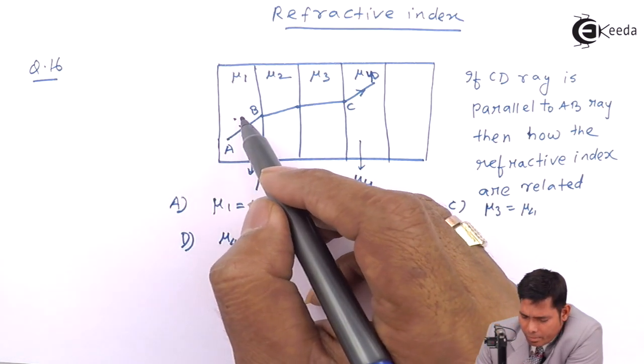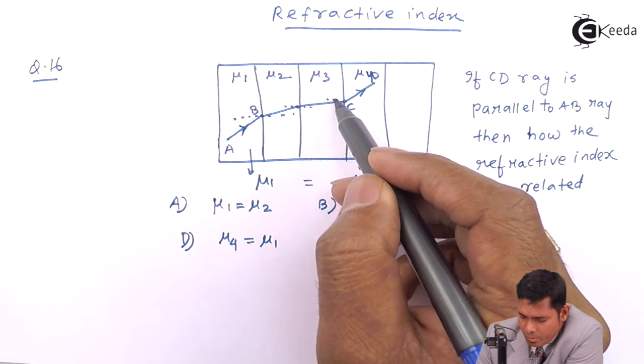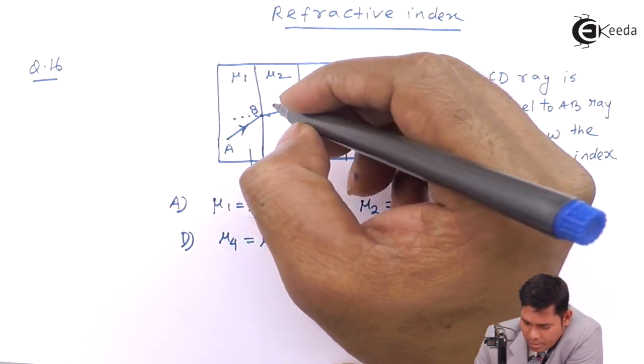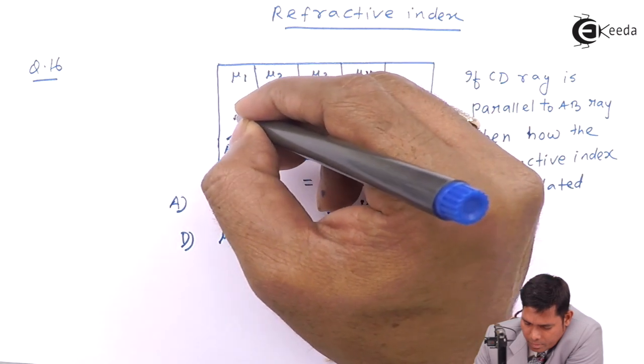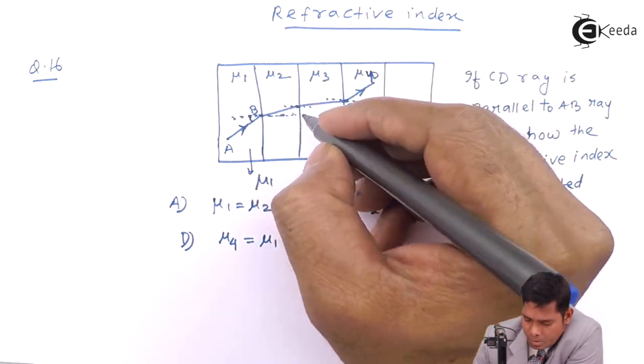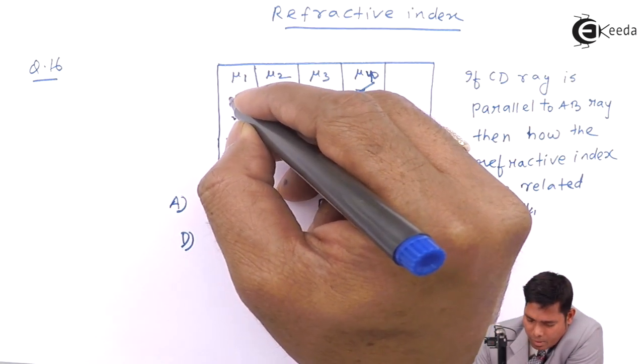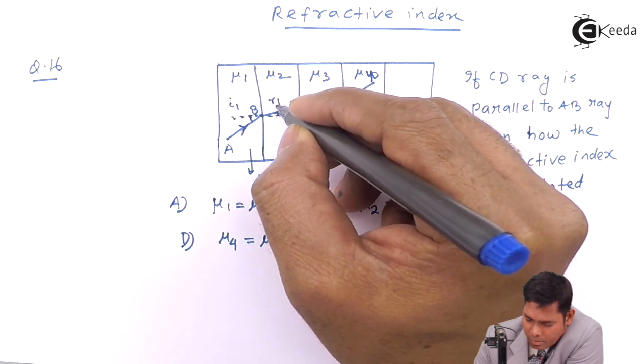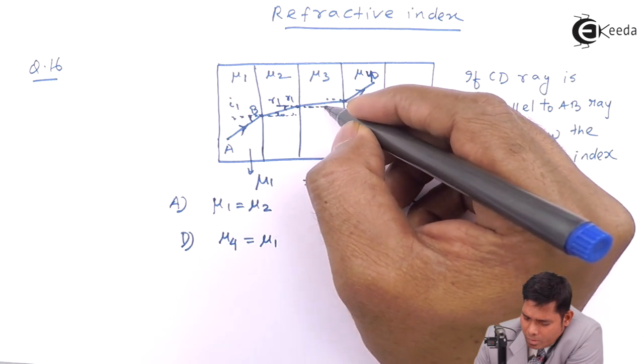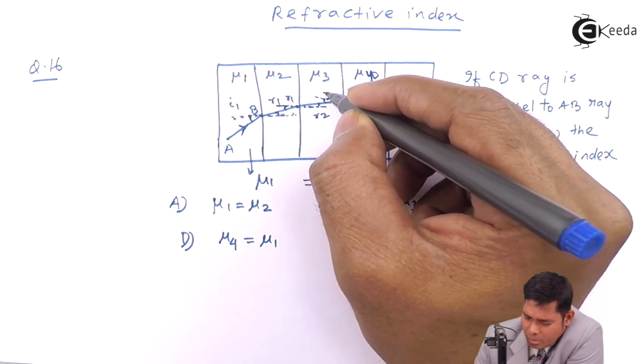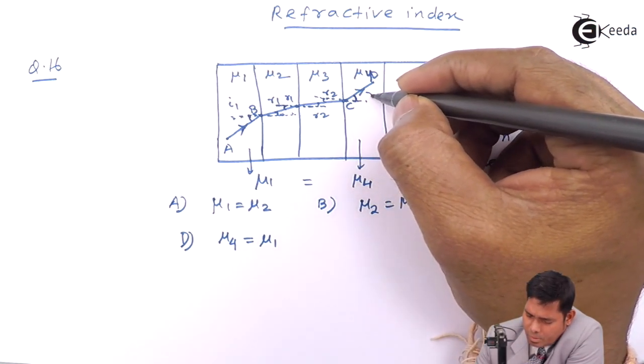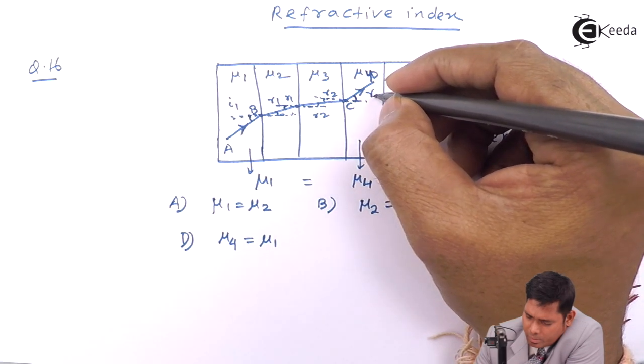But then we will have another situation like this. You can make another situation like this, that this is your mu1 and this angle is suppose i1, this is r1. If this is r1, then this is also r1. If this is r2, then this is also r2. And this angle is suppose r3.